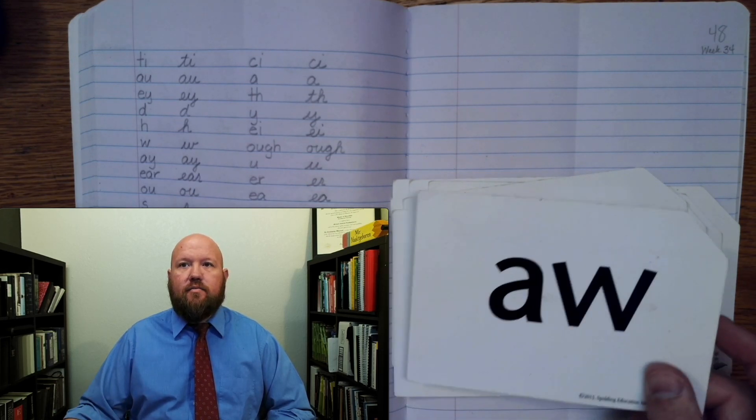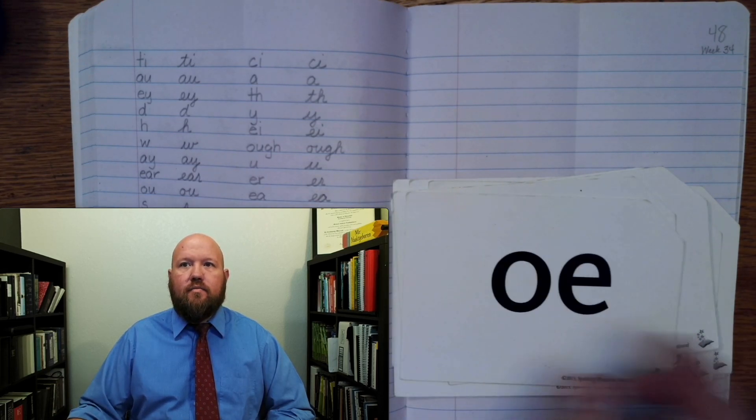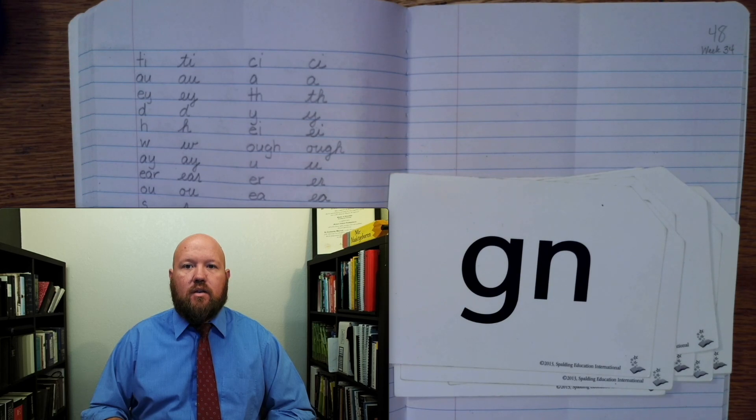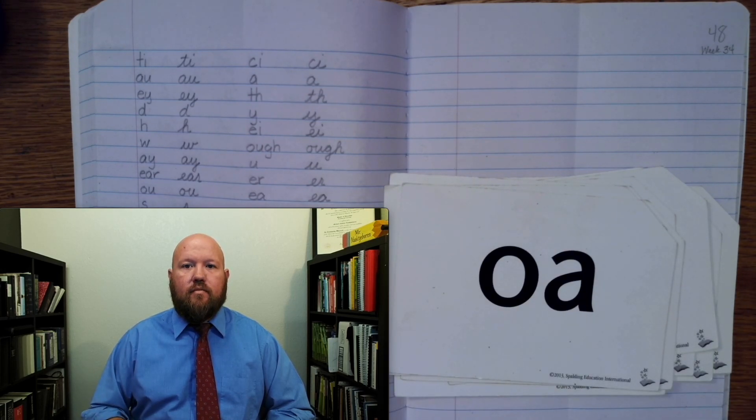C. A. O. O. N. Two letters. Ow. O. O. Boat. B. All right.